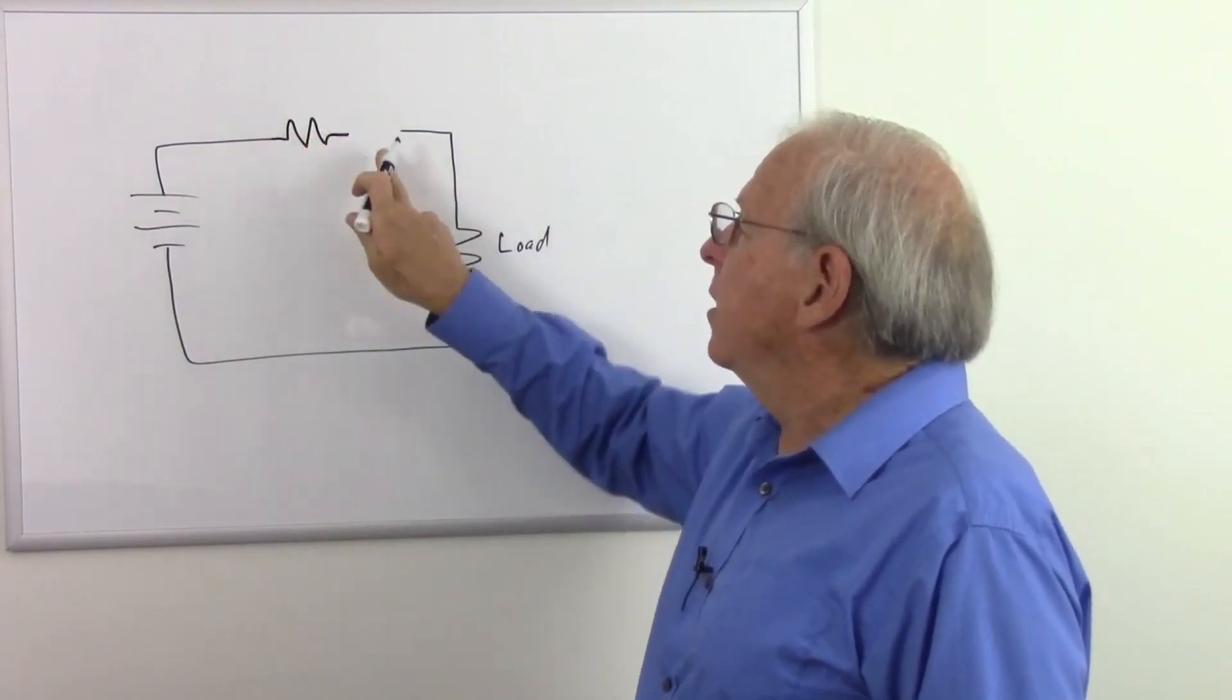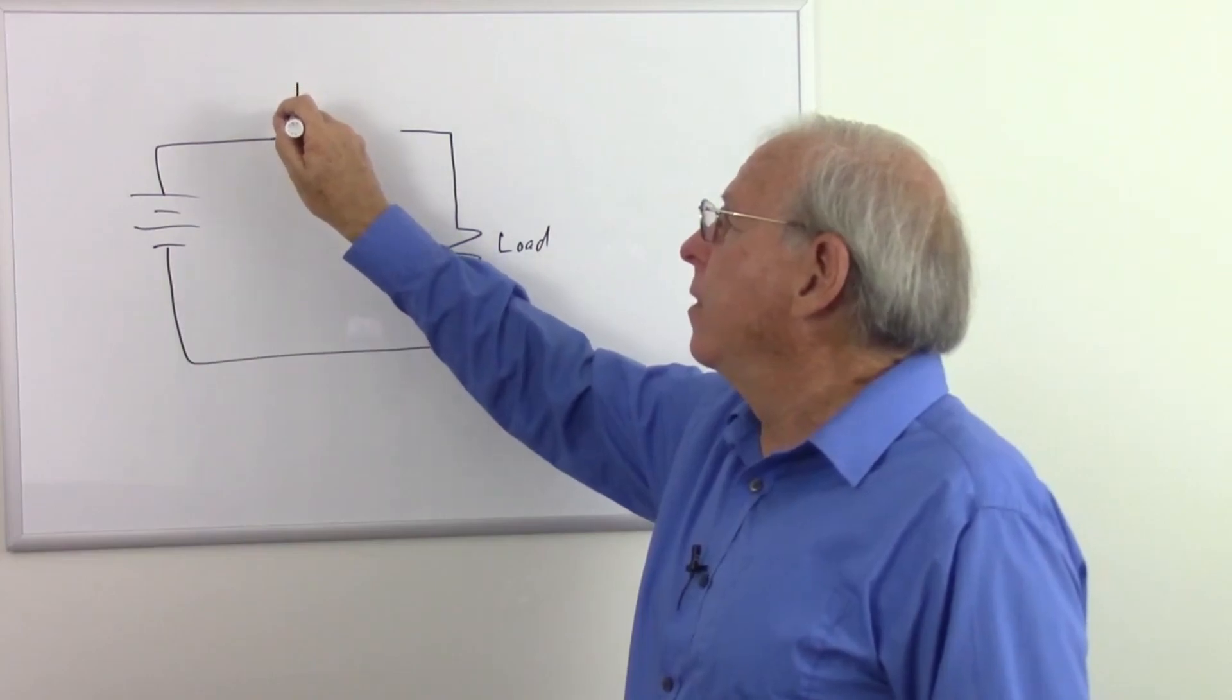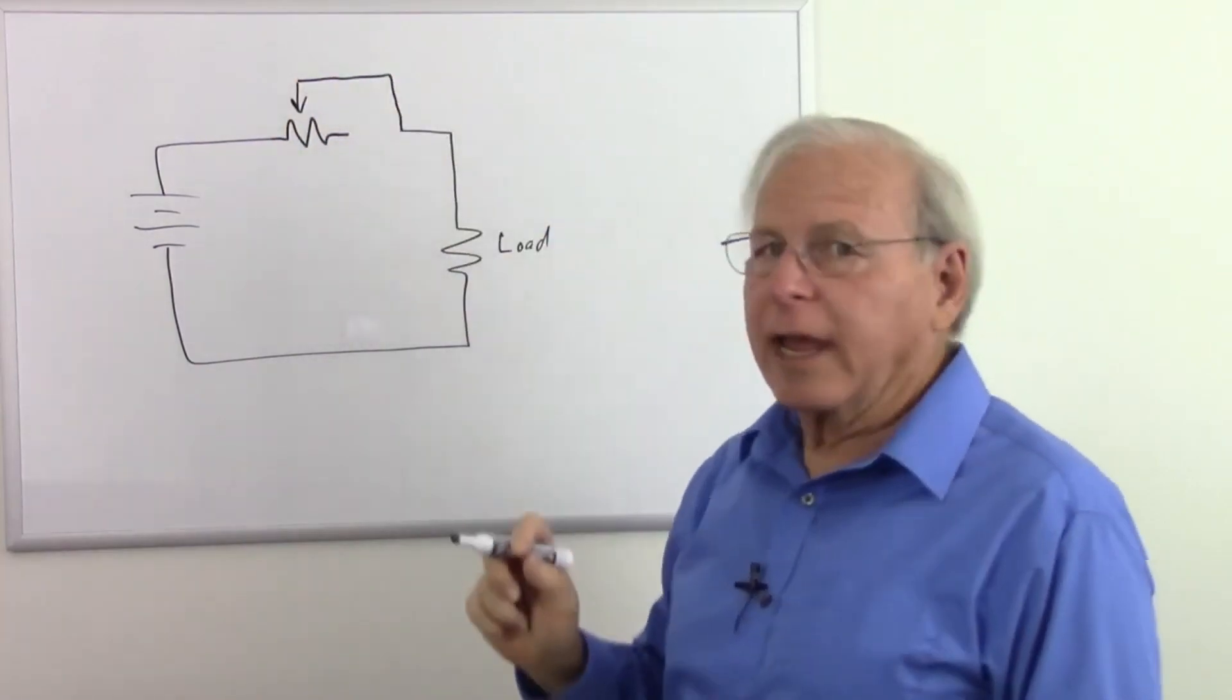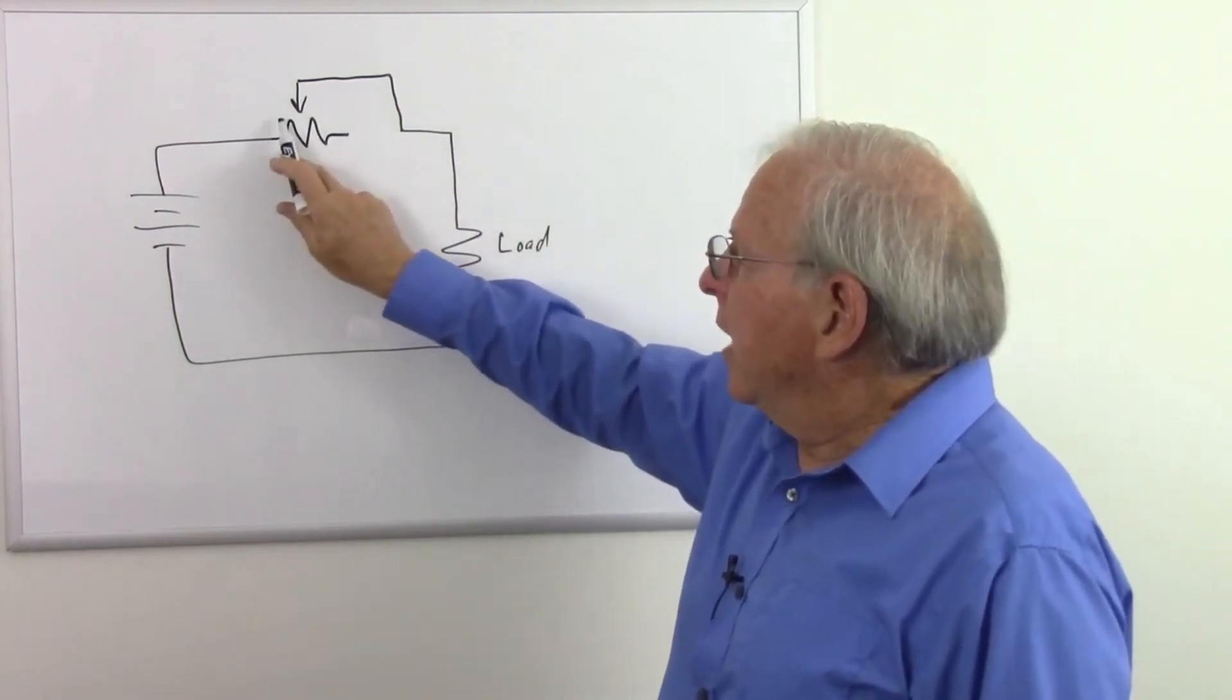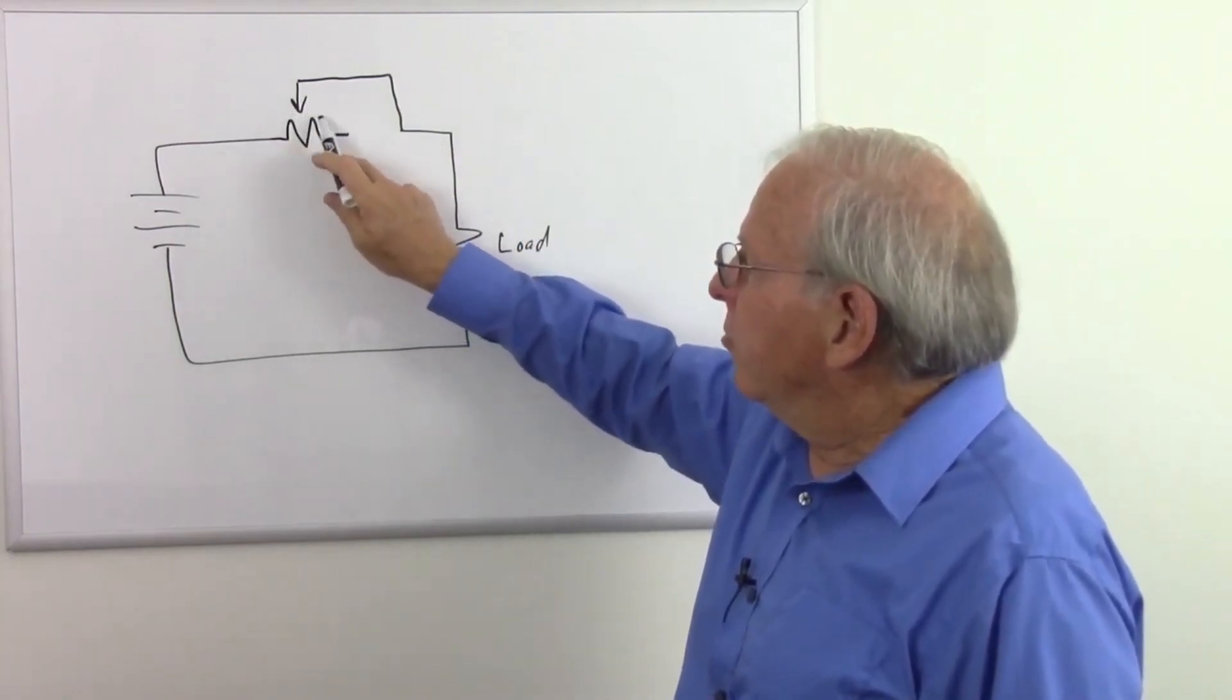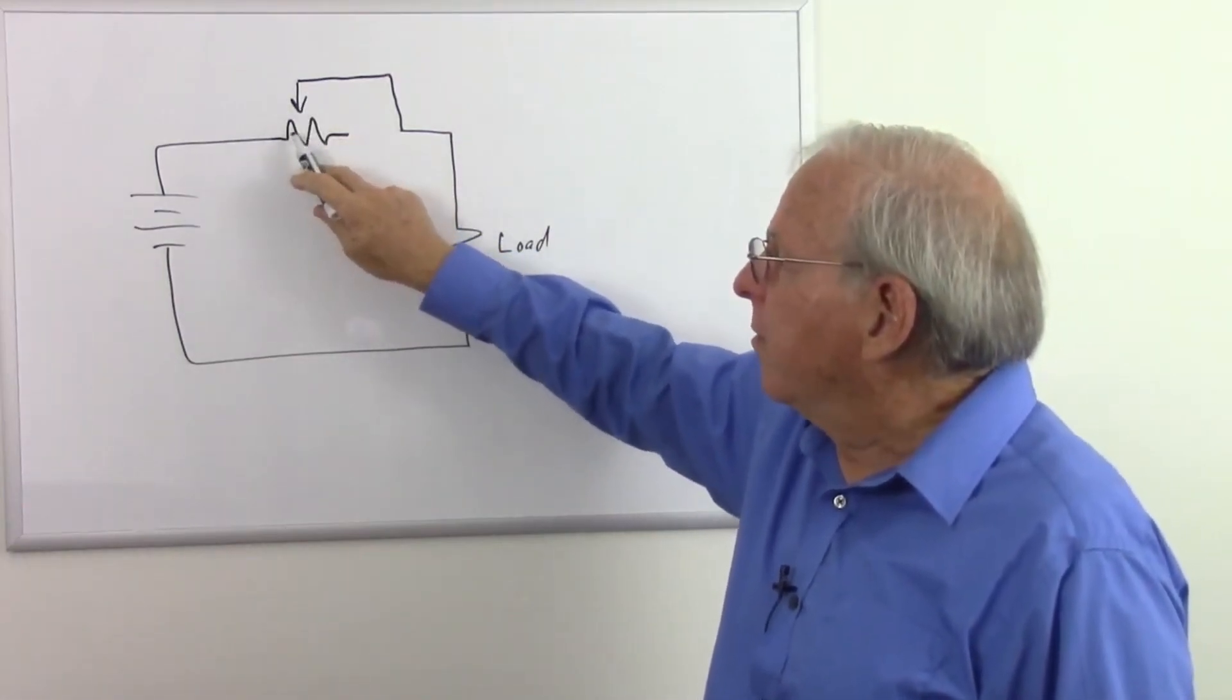So how do I hook up a potentiometer as a variable resistor? Well, I could just leave it not connected there and then take the wiper and connect it over like that, and that would work because now I have a variable resistance depending on how much of the resistor track is between the wiper and this side.